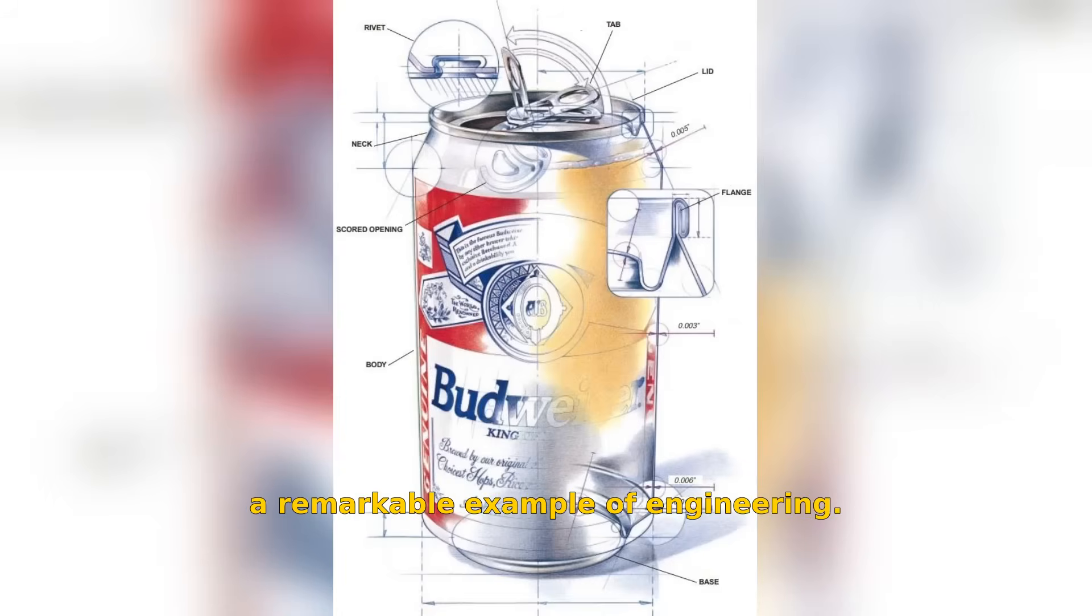The aluminum beverage can is a remarkable example of engineering. Every aspect of its design is purposeful, ensuring durability and functionality.